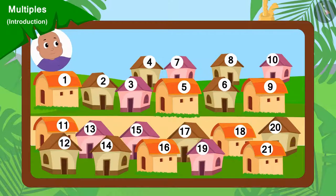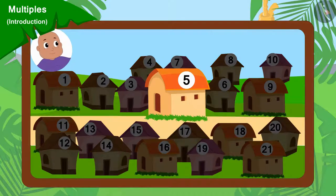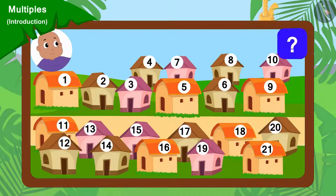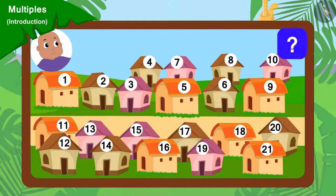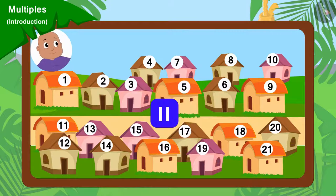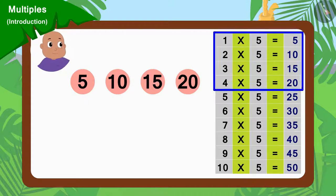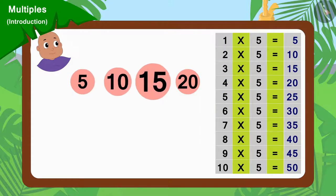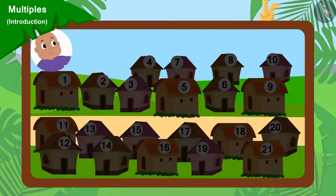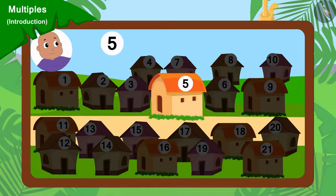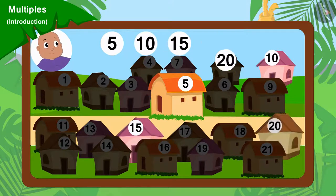Now, finally, if Bablu went to collect donations from every fifth house, then can you find multiples of 5 and find out which houses Bablu went to collect donations from? Well done, children, your answer is absolutely correct. We can find multiples of 5 with the help of the multiplication table of 5. Bablu will go to collect donations from houses 5, 10, 15 and 20.